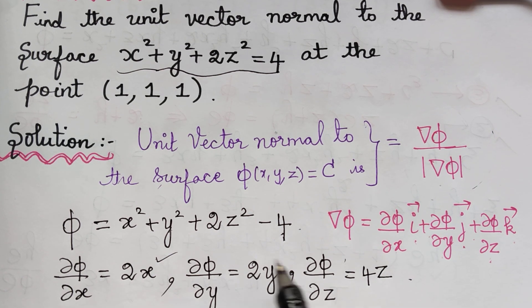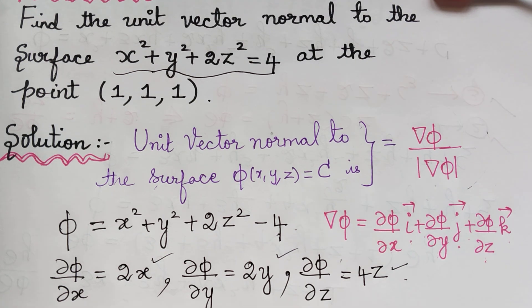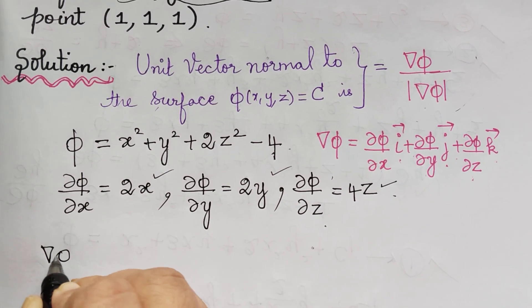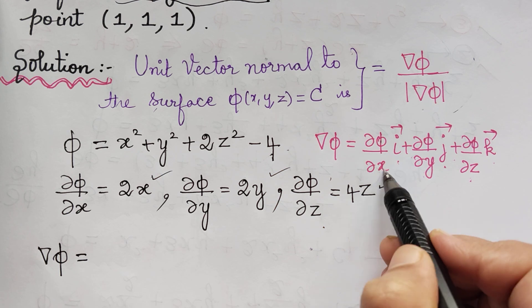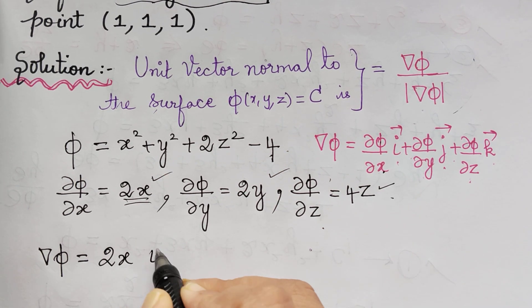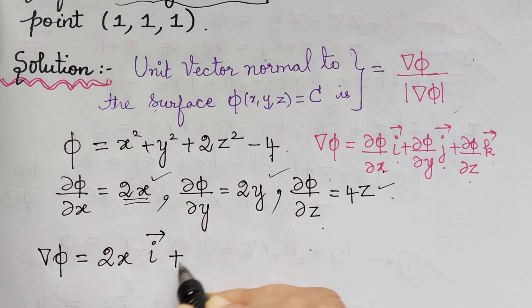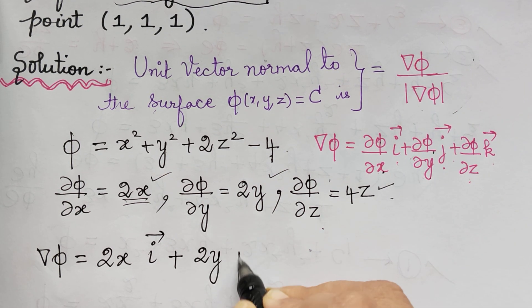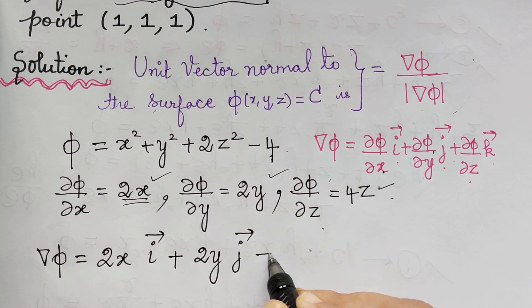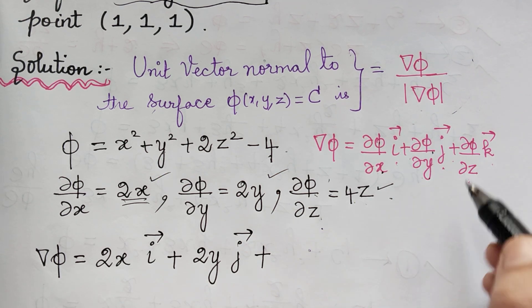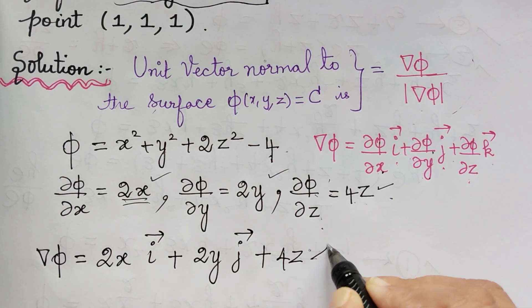Substituting these three into the gradient formula, ∇φ = 2x·i + 2y·j + 4z·k.